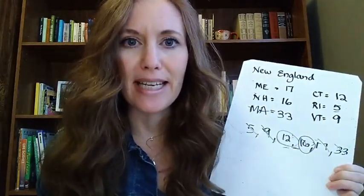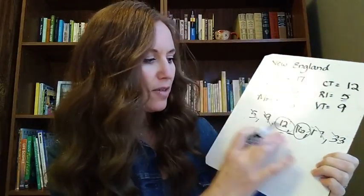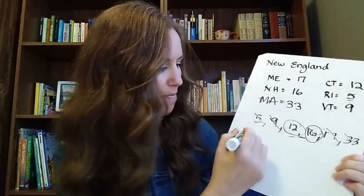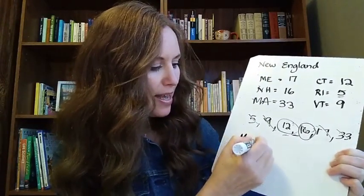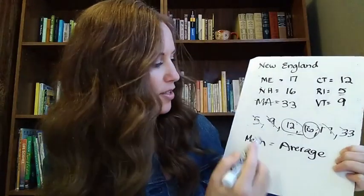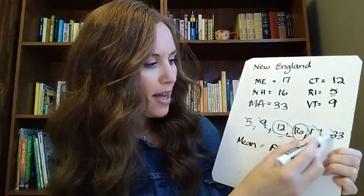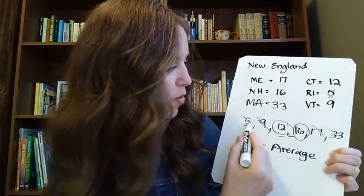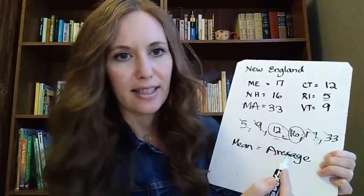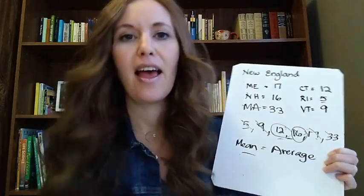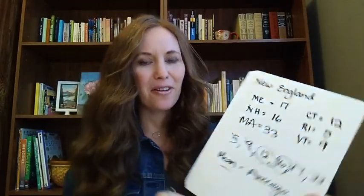Next we're going to talk about mean. Just like we did before, we're going to find an average, but we're going to use all of the numbers to get our mean because mean is like the average. So we'll add all these numbers up, come up with our total, and divide it by the number of values we have here — one, two, three, four, five, six. There are six values. So we'll add those up, divide it by six, and that gets us the mean. Now you know a little bit more about mean, median, and mode.